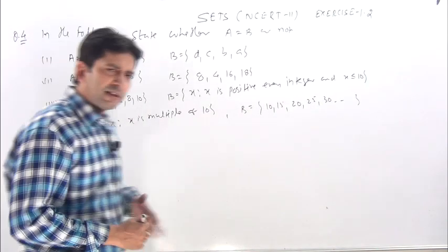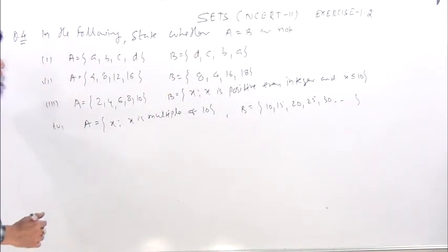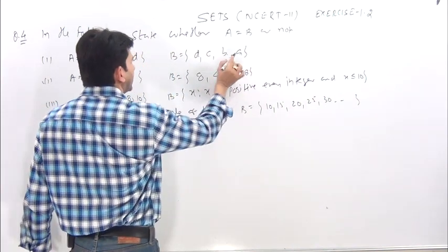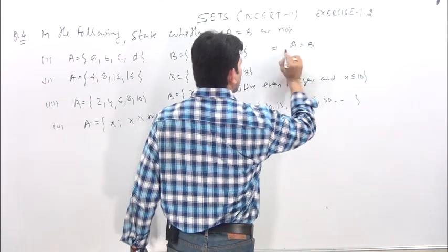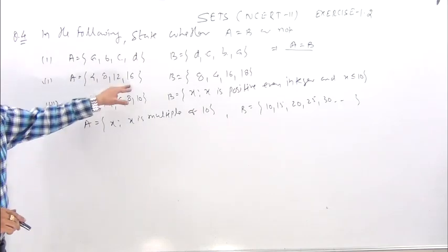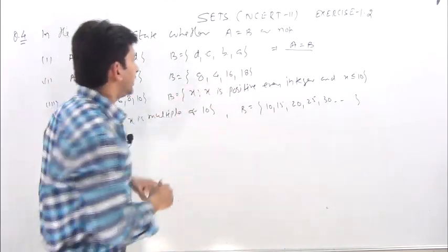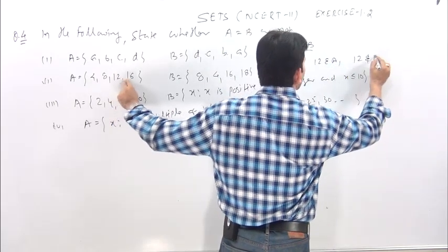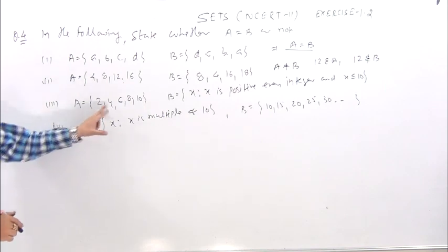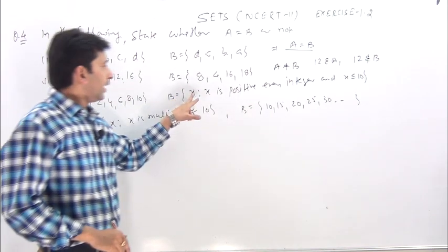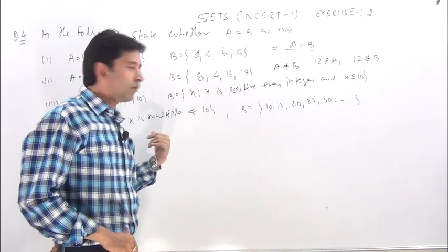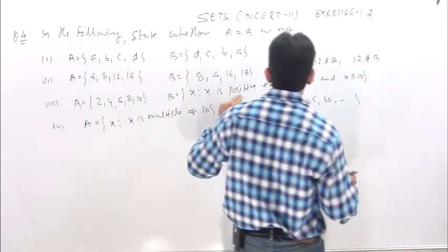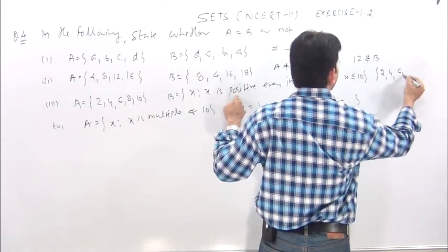Question number 4, a similar question: which sets are equal? A equal to B means equal sets. Elements a, b, c, d here; a, b, c, d there. So first, A equal to B. If we look at second: 4, 8, 12, 16 versus 4, 8, 16, 12. A not equal to B because 12 belongs to A but 12 does not belong to B in order. Third: 2, 4, 6, 8, 10. You have a table form; here in set builder form, x such that x is a positive even integer less than or equal to 10. So obviously 2, 4, 6, 8, 10. This is also equal set.